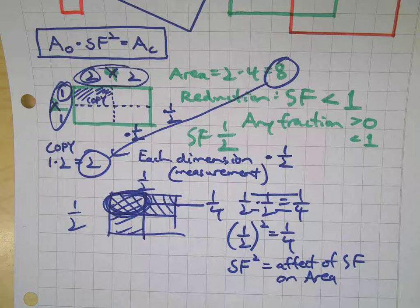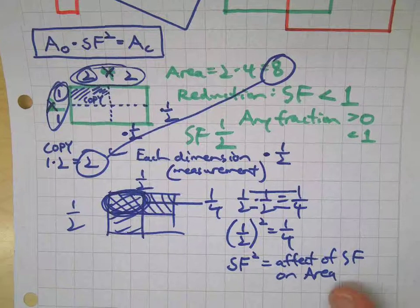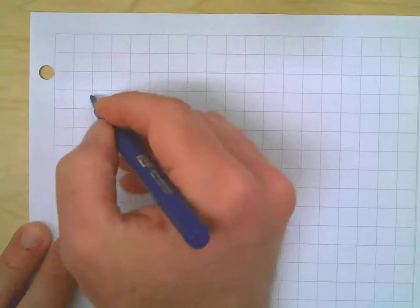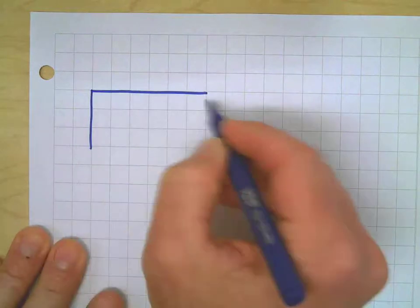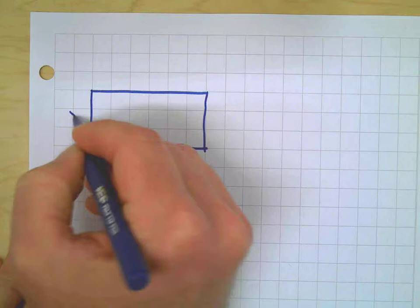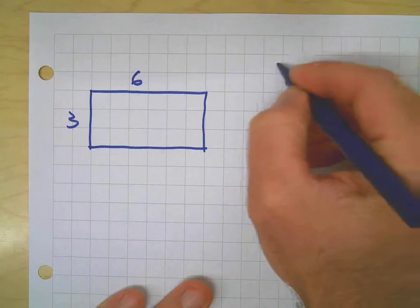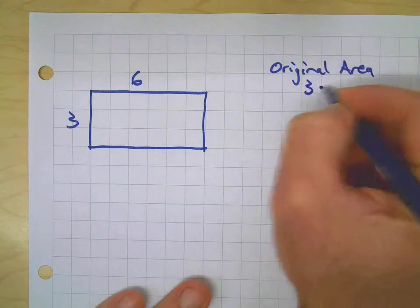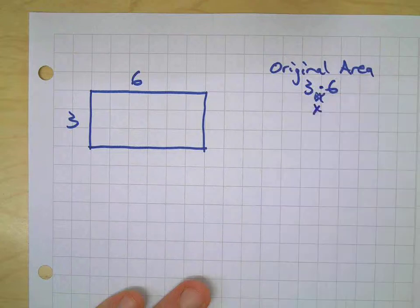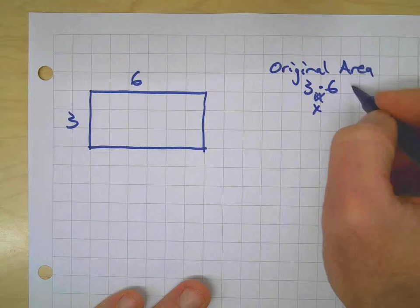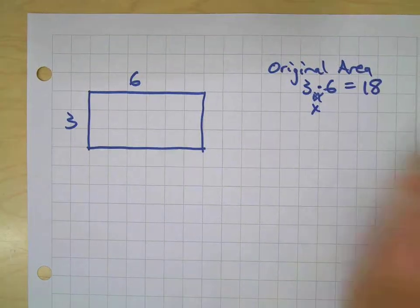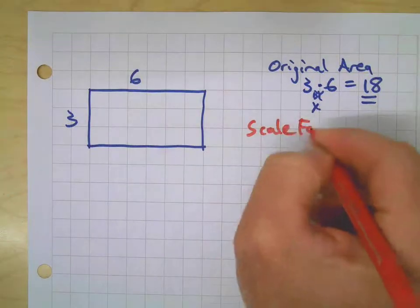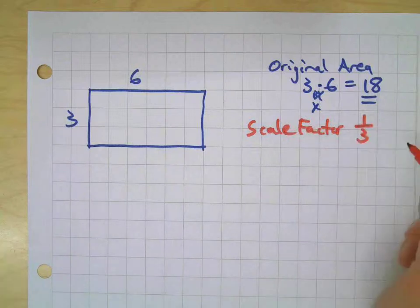Let's do one more sample and then we'll have confirmed our algorithm. Let's make a new rectangle — three by six. So my original area is three times six, which is 18.